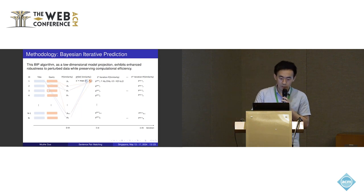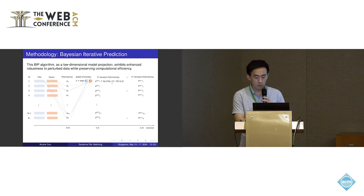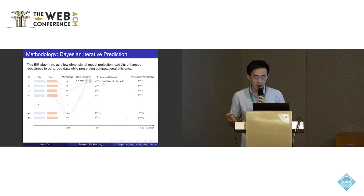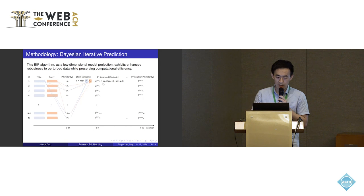Instead, first we find similar sentence pairs and use the prediction scores of similar sentence pairs to serve as prior information or prior probability. Then P1 can serve as the likelihood value. We use the Bayesian equation to calculate the posterior probability based on the likelihood value and prior information. This posterior probability can serve as the likelihood value for the next round prediction. By repeating this process until the labels converge, this is called Bayesian iterative prediction.